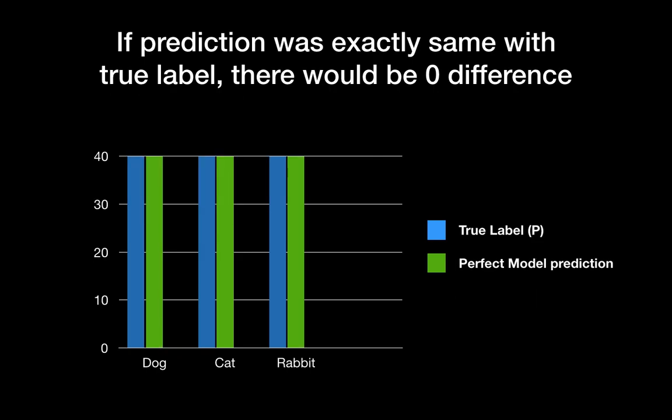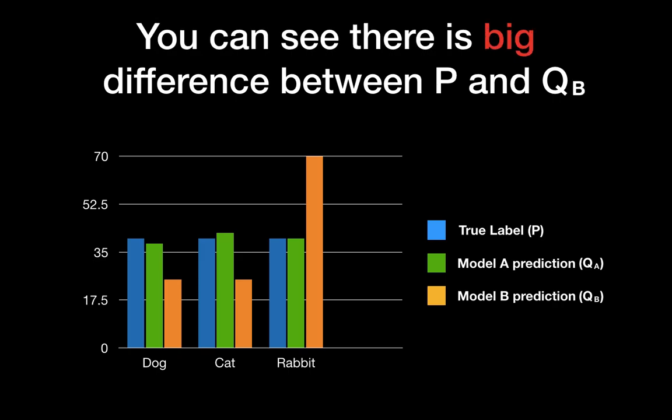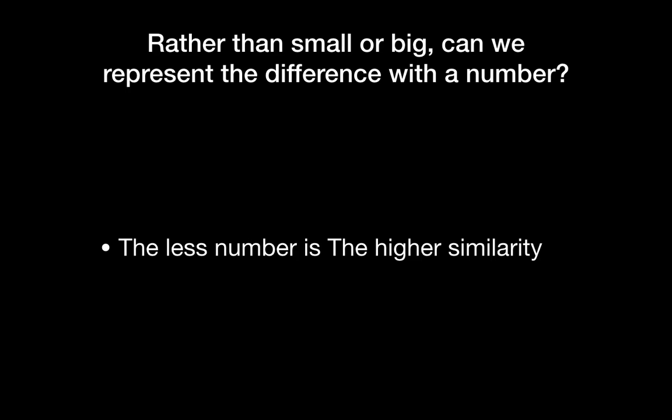Well, let's take a step back. If we have the perfect machine learning model predicting exactly the same as the true label, you will see there is zero difference between the true label distribution and the model's prediction distribution. Now let's take a look at the blue and green bar chart here. They look similar, but there are small differences between them. Relatively, you can see there is a big difference between the true label and machine learning model B's prediction here.